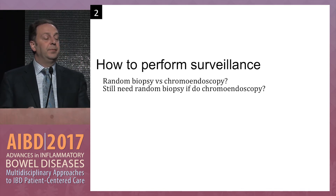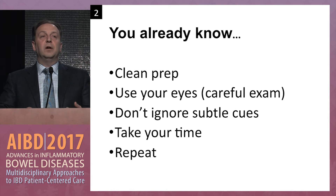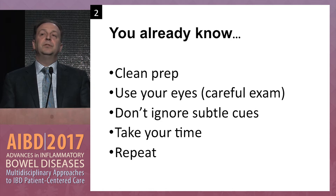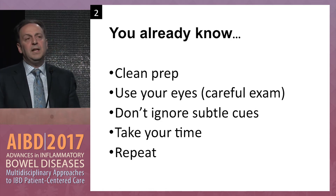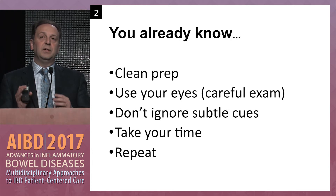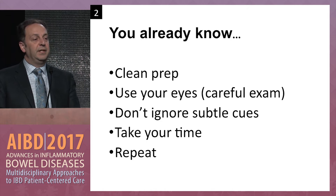How to perform surveillance: do you still need to do four-quadrant random biopsies? Think about your non-IBD surveillance colonoscopy life. You want a clean prep, use your eyes, do a very careful exam, and look for flat polyps. Don't ignore subtle clues — look for something that's different than its neighbor, which should attract your attention as a potentially suspicious lesion. Take your time, and that's how you detect more dysplasia.